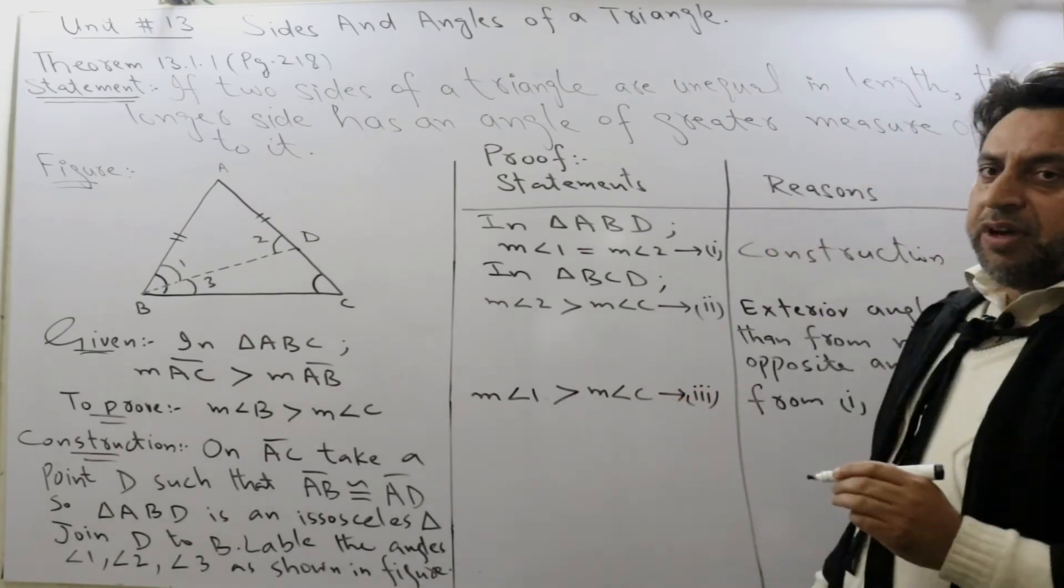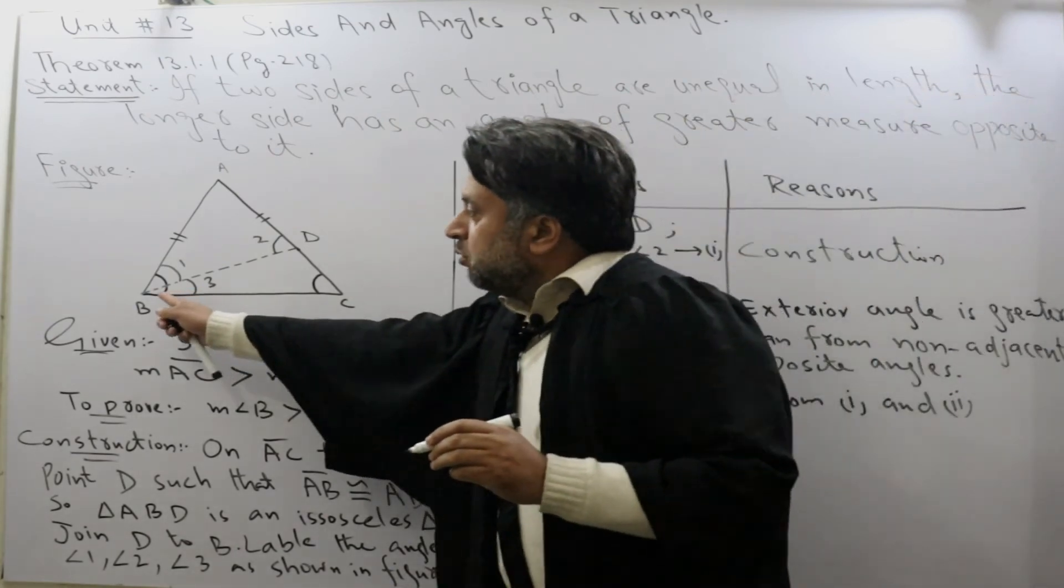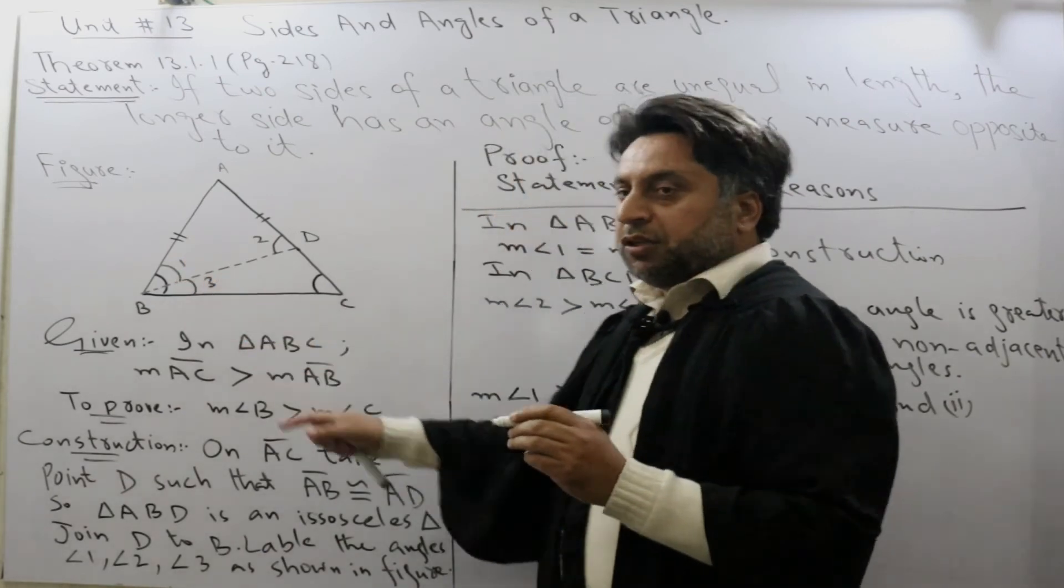Now from figure, angle B is equal to measurement of angle 1 plus measurement of angle 3.